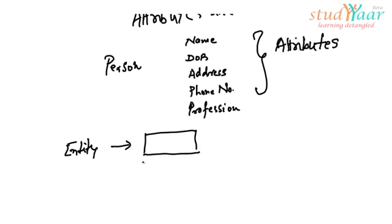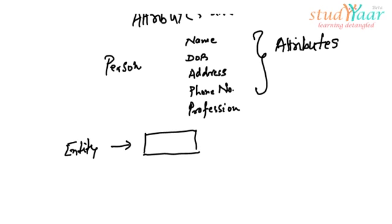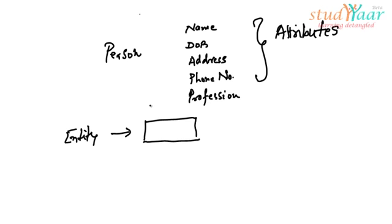So, this is the representation of an entity and we write the name of the entity inside it. So, if I have to represent persons, the set of all the persons, I'll write it like this in an entity relationship diagram.